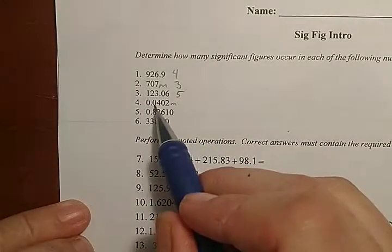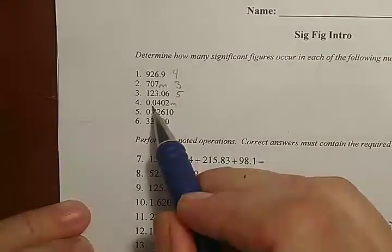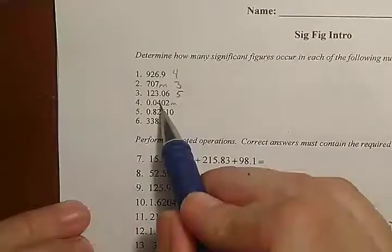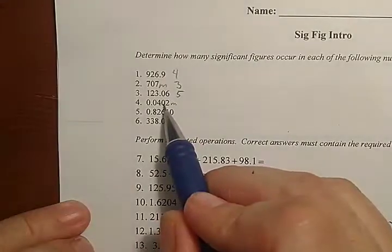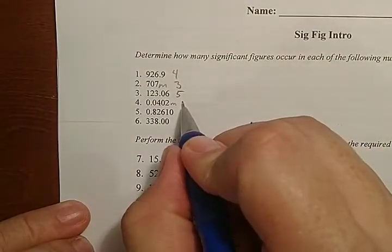So, note to self, 0.0 does not count as a measurement. It's not significant figures. So, the measurement started at the hundredths place here. And then it measured four, and it measured zero, and then it measured two. And that is three significant figures.